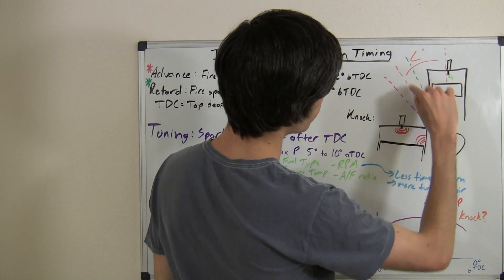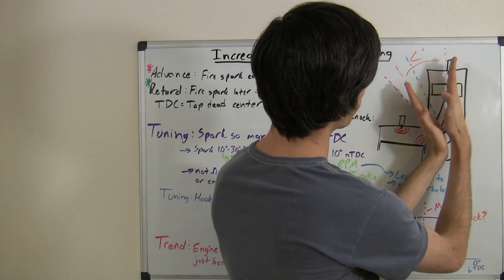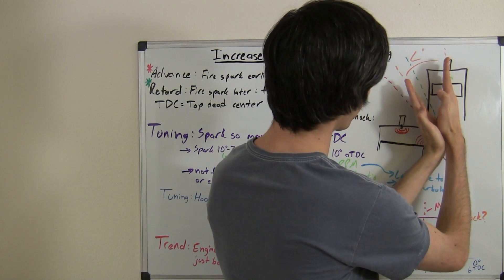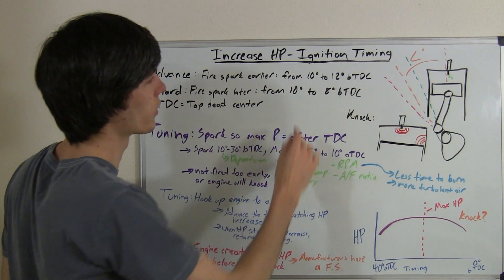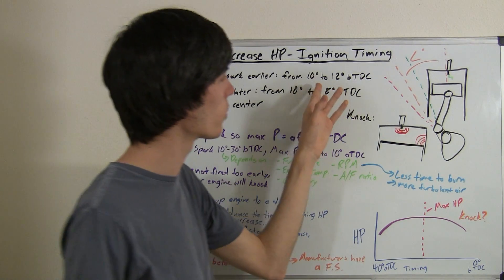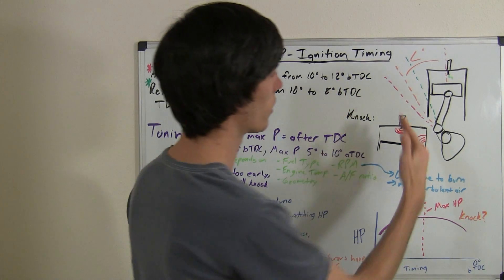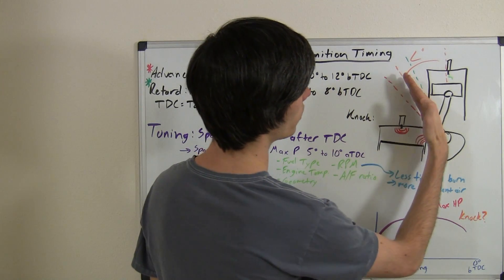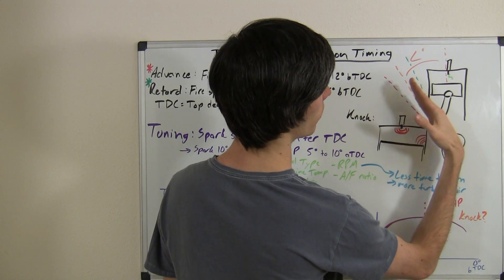So the angle that we've got here between what the crankshaft is pointed towards and the very top of the cylinder, that's our angle that we're talking about here. So advancing the timing, for example, would mean going from firing the spark 10 degrees before top dead center to firing the spark 12 degrees before top dead center. So that's this line here. You'd be firing the spark when the crank was here rather than here.